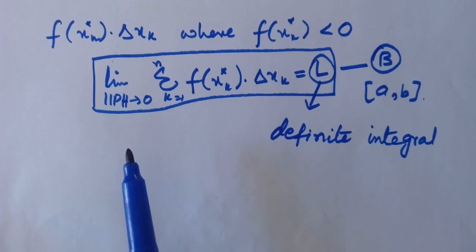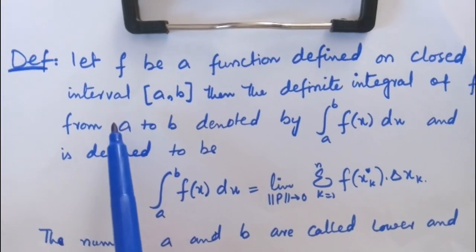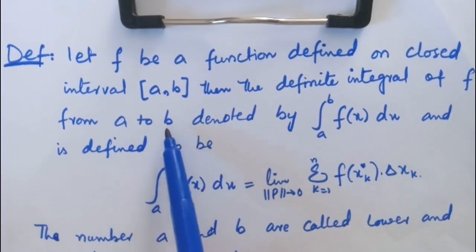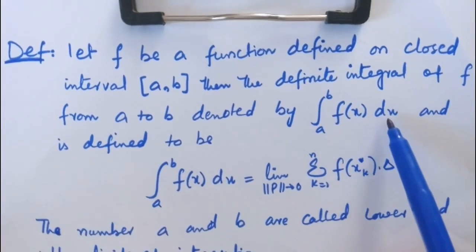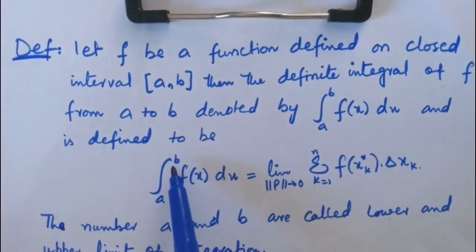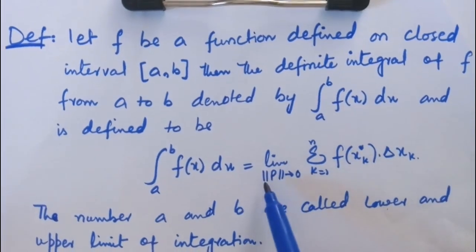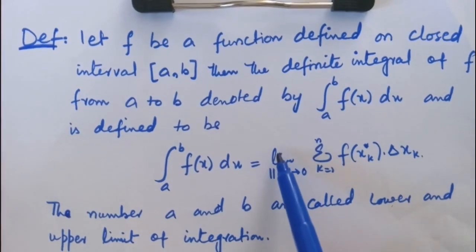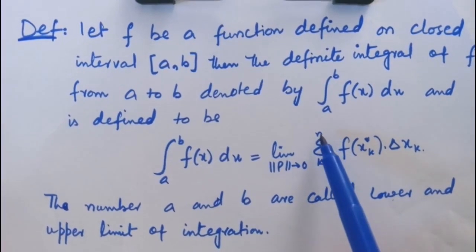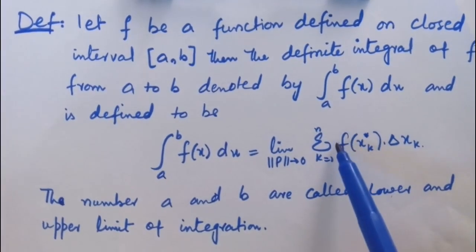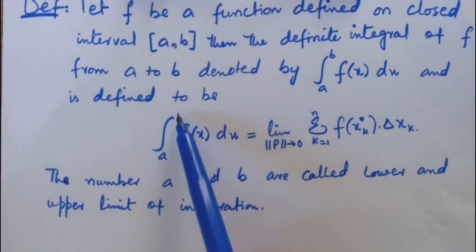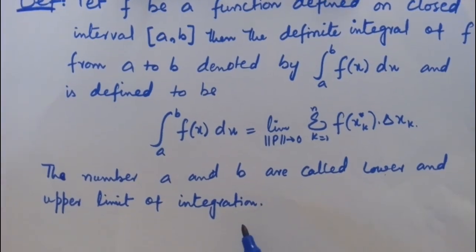We are now in a position to define the formal definition of a definite integral. Definition: Let f be a function defined on the closed interval [a, b]. Then the definite integral of f from a to b, denoted by the integral from a to b of f(x) dx, is defined as: the limit as the norm tends to 0 of the summation from k=1 to n of f(x*k)·Δxk, where a and b are called the lower and upper limits of integration.